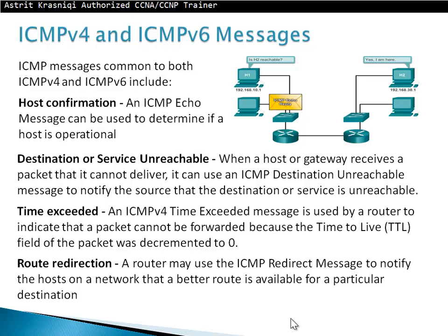Route redirection. A router might use the ICMP redirect message to notify the host on a network that a better route is available for a particular destination. So if you send to the gateway for a destination and the gateway knows that there is a better way, it will tell you — there can be a route redirection.